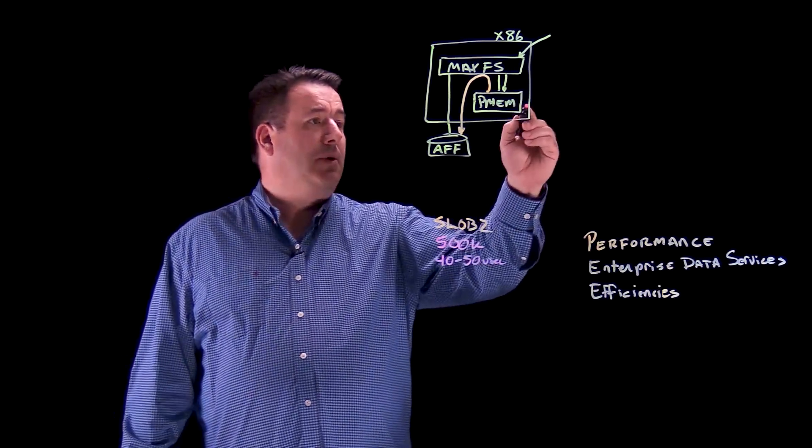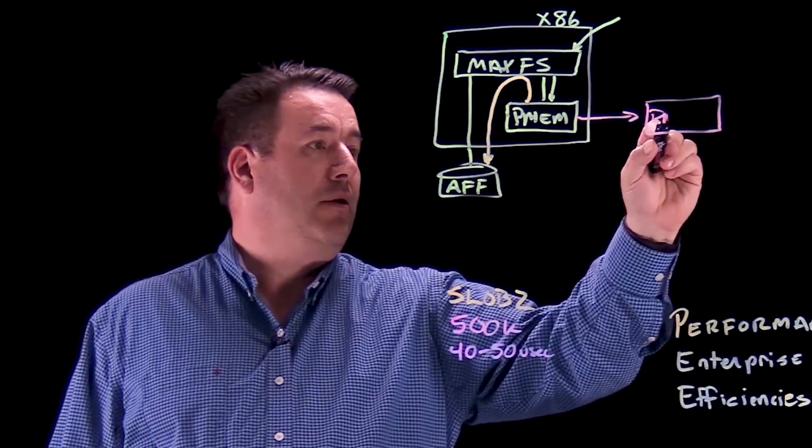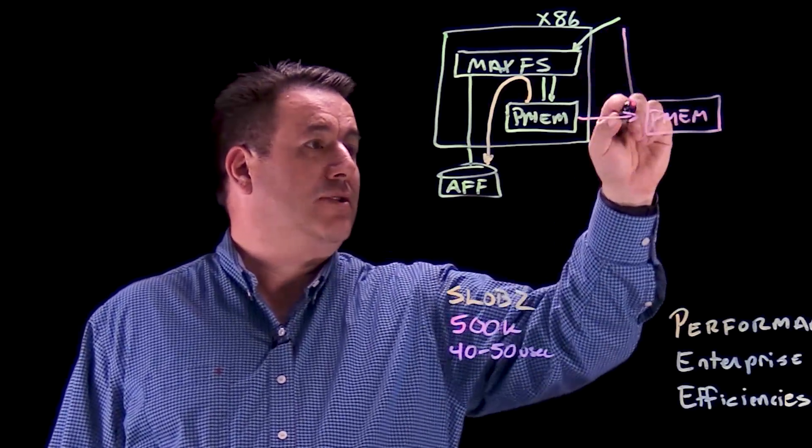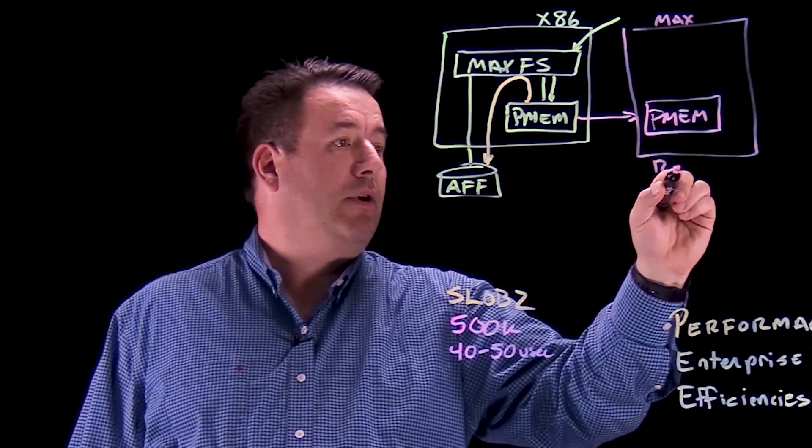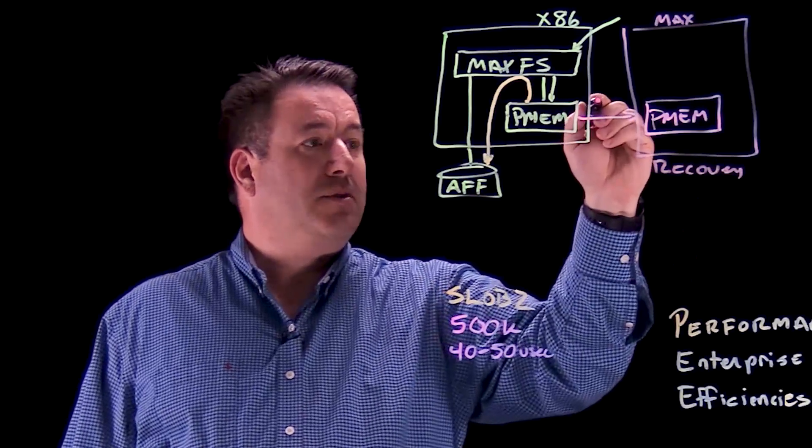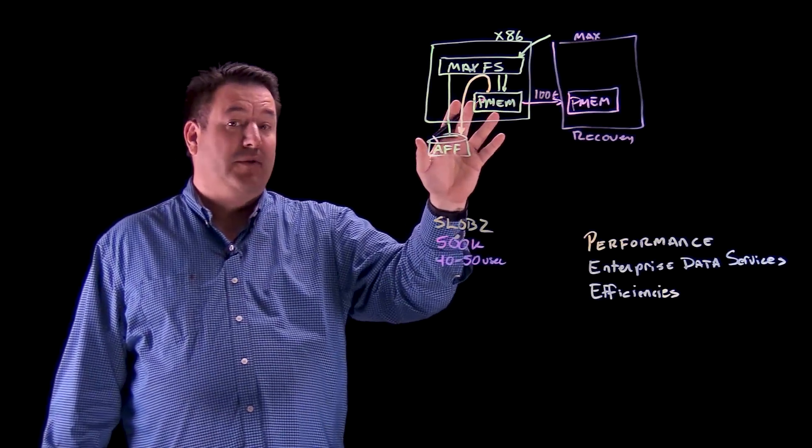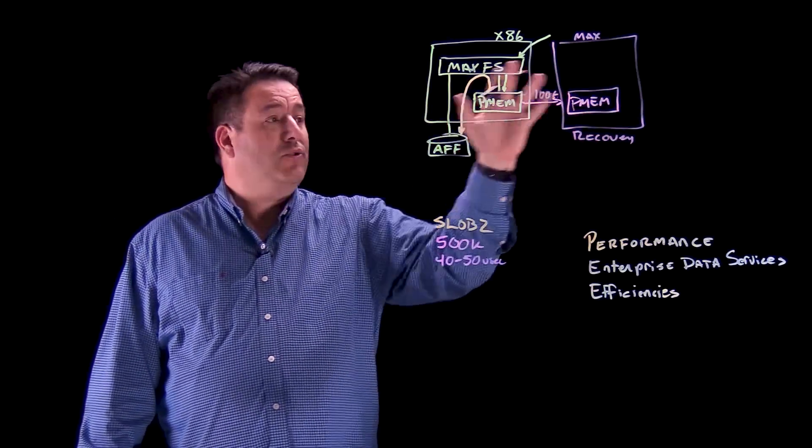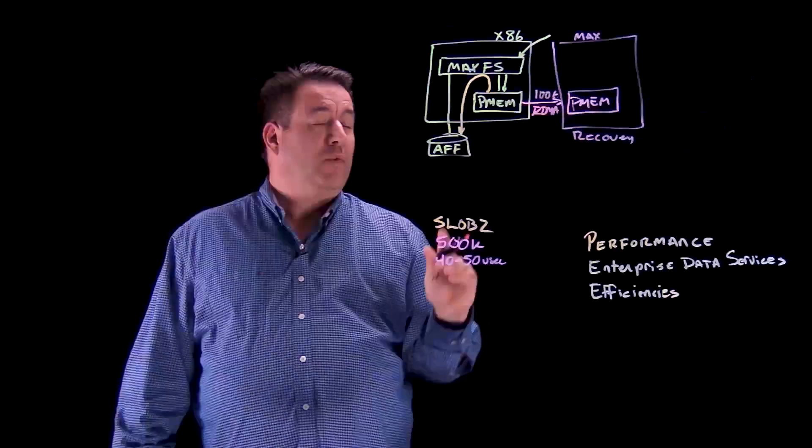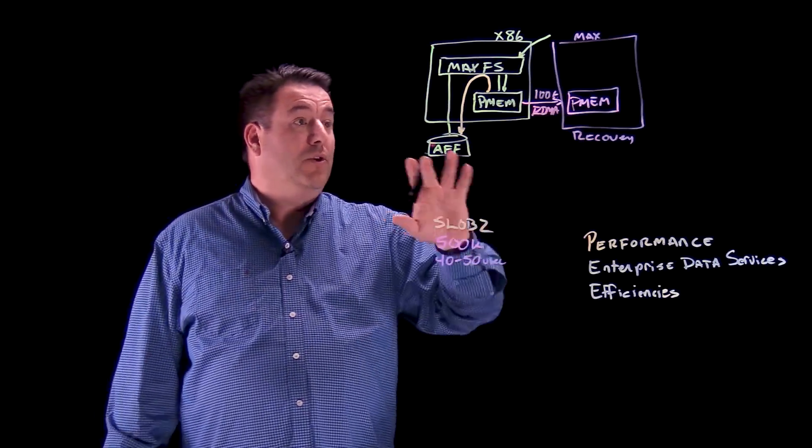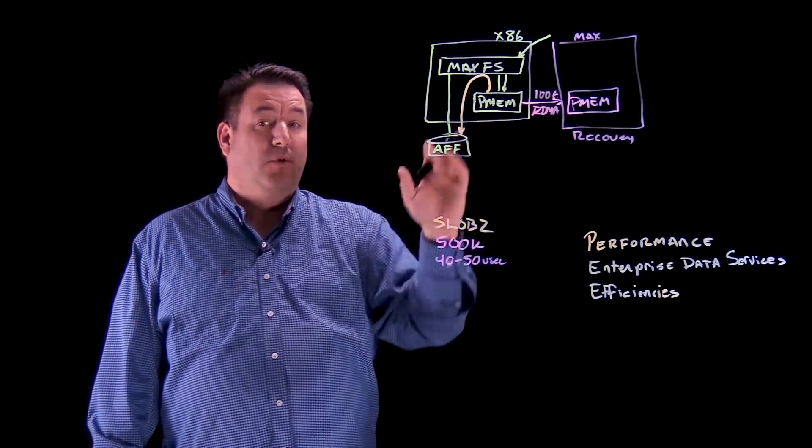We've also created some products to help us protect persistent memory. And that's called MaxRecovery. MaxRecovery gets installed on a server and it allows us to be able to replicate persistent memory from one MaxRecovery server to a MaxRecovery server over a 100 gig RDMA network. And this is all done in software. Software replication over a 100 gig network to be able to achieve a zero recovery point objective for the persistent memory layer.